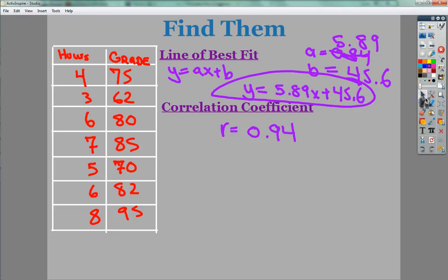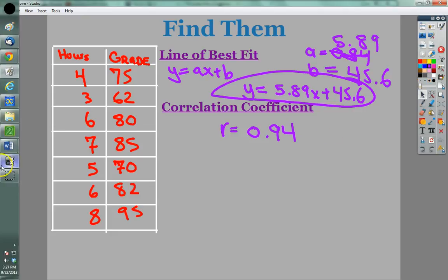But that's it. Correlation coefficient, line of best fit, all in the TI-84, and a little explanation.